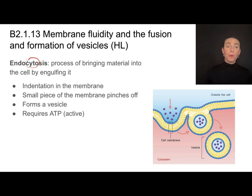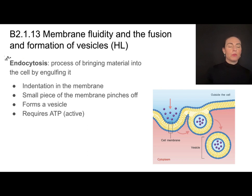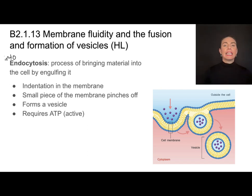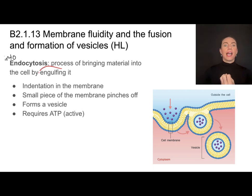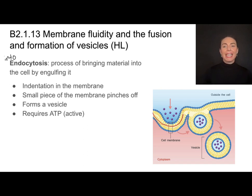Let's work on our root words. Cyto means cell; endo means into. So we're moving things into the cell — this is a process of bringing materials into the inside of the cell by engulfing it. What a cell can do is actually make an indentation in its cell membrane, and then a small piece of that membrane pinches off.